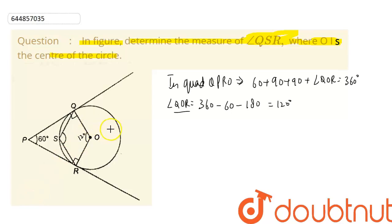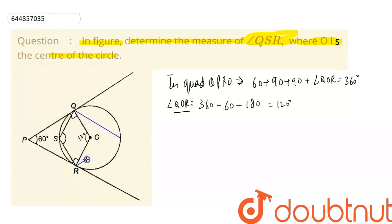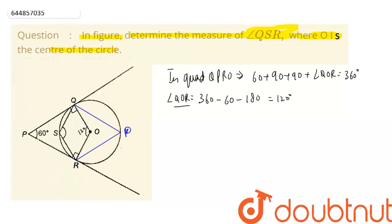Now for solving this question we are going to do some construction. From point Q we drop a line, and similarly we draw a line from point R. We name the intersection point as point M.